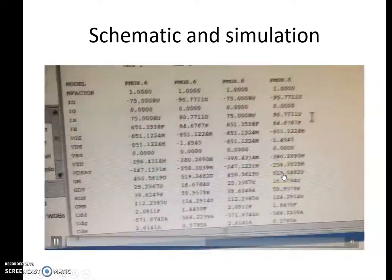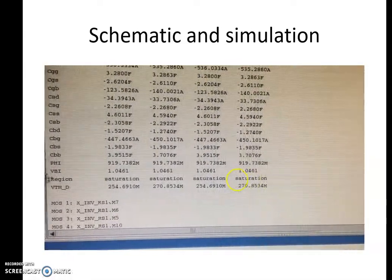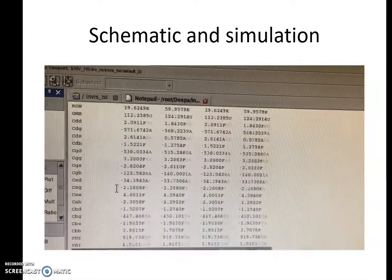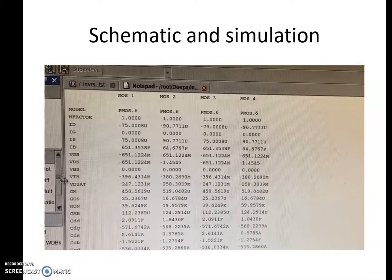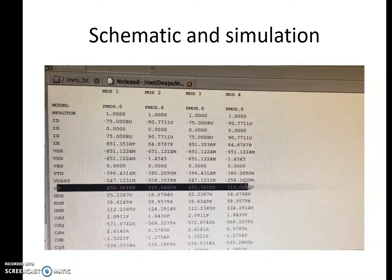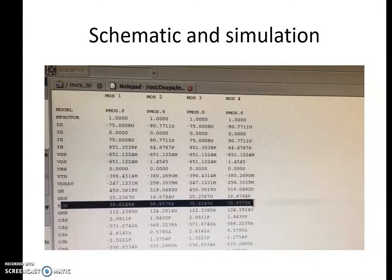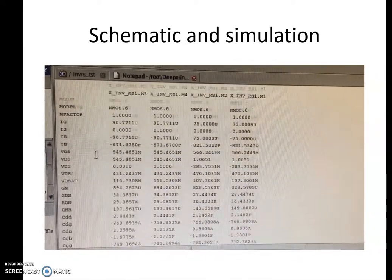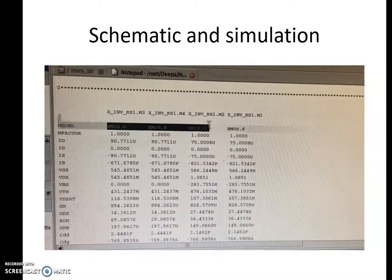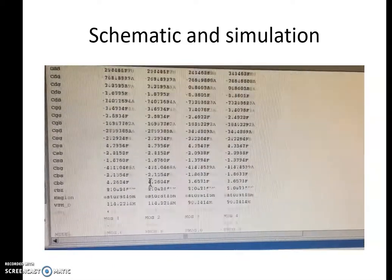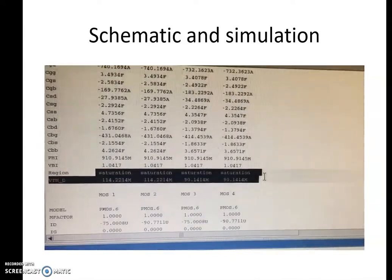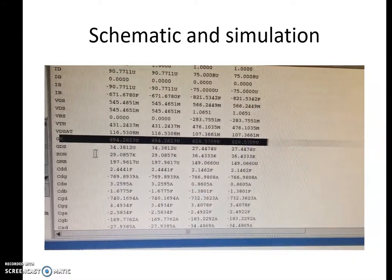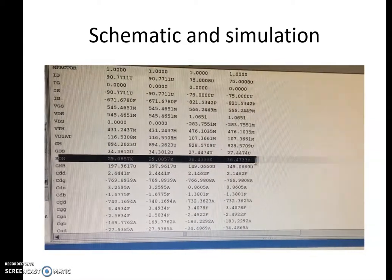Here we can see that all four pMOS transistors are operating in the saturation region. Once confirmed, we note down the values of gm and r-out, which are required for the theoretical calculation of the gain. Similarly, we check all four nMOS transistors — they should also be operating in the saturation region. Once confirmed, we note down their transconductance and resistance values.